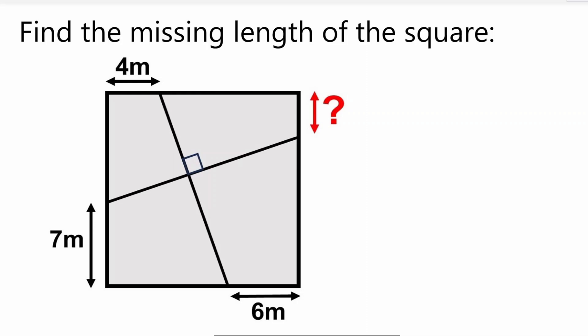In this video we're going to find the missing side length of a square. Since it's a square, all side lengths are equal and all corners are right angles. There are lines dissecting into the square that make a right angle at their intersection point. We're given side lengths of four meters, seven meters, and six meters, and we need to find the missing length.